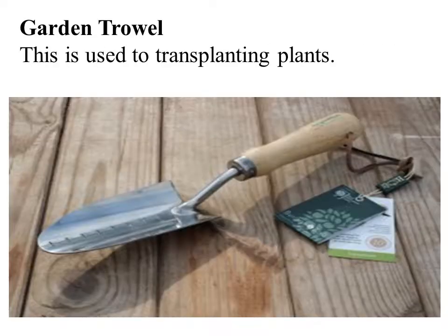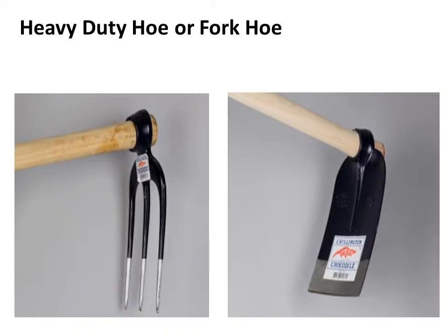In this slide you can see the garden trowel — it is small in size and used to dig the soil for transplanting seedlings from one place to another, such as from a nursery to another location. You can also see two different types of hoe. A hoe is basically a spade — it is used to dig the soil for preparation, to sow seeds, and for putting in seedlings.